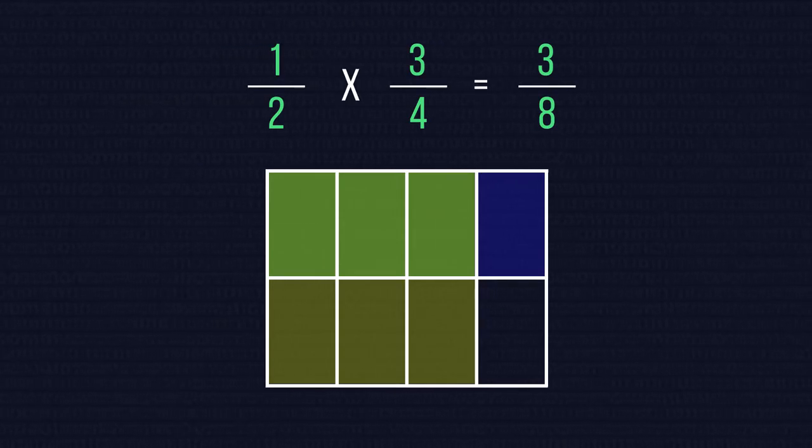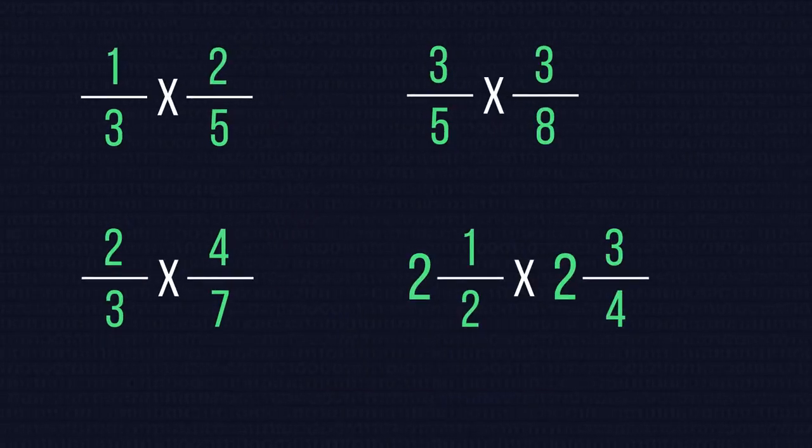To multiply two fractions together we must multiply the numerators and the denominators by themselves. Have a go at these questions here. How did you do?